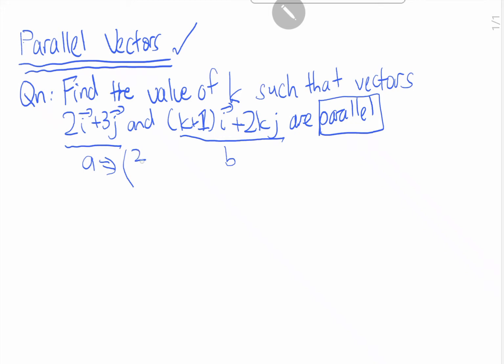So 2i is 2 and 3. This one we can just present as k plus 1 and 2k.